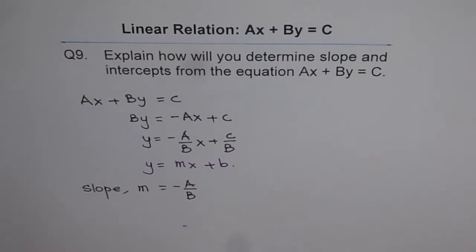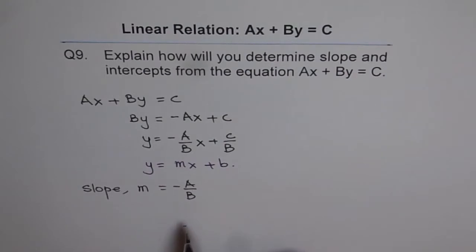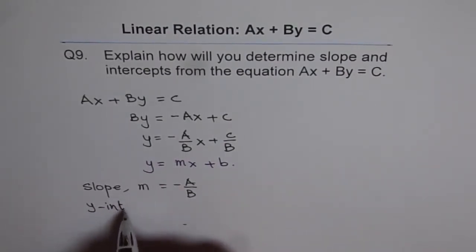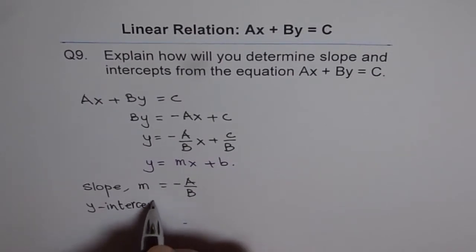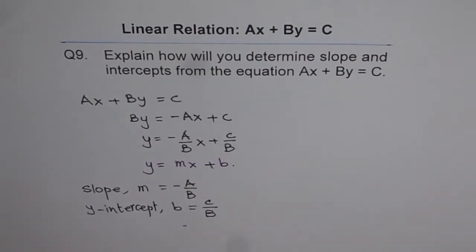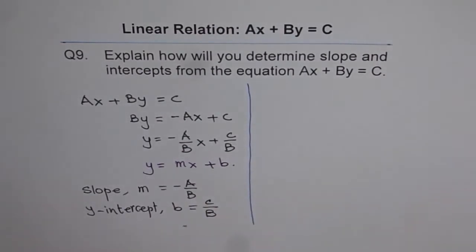And what else? You also find that B is C over B. That is Y-intercept. B equals C over B. So these two things we can straight away get by rearranging our equation in slope and intercept form.